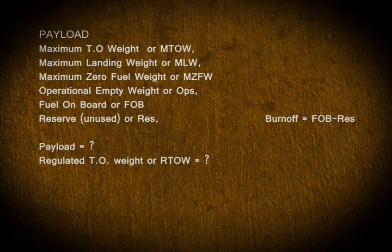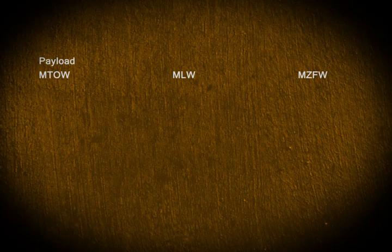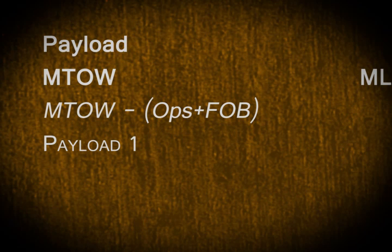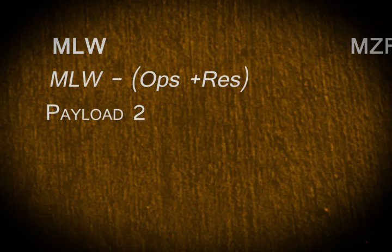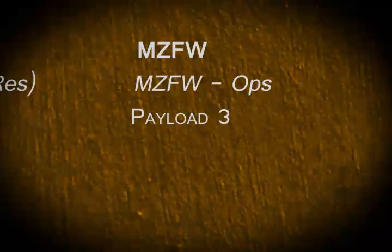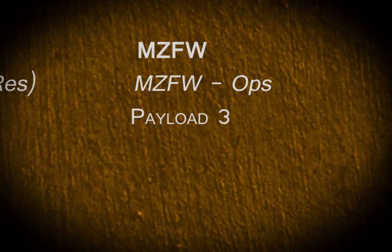To calculate the payload, we separate the answer sheet into three separate parts and tackle each part separately. For maximum takeoff weight: MTOW minus operational empty weight plus fuel on board — call it payload one. For maximum landing weight: MLW minus operational empty weight plus reserve — call it payload two. Maximum zero fuel weight minus operational weight gives us payload three.